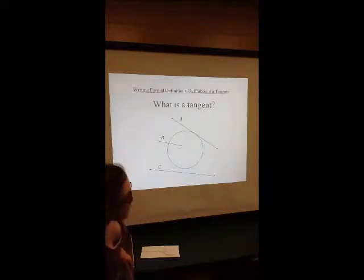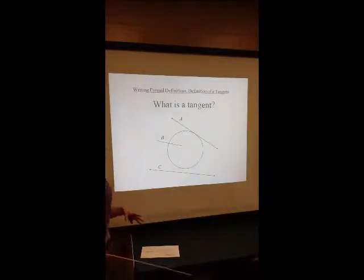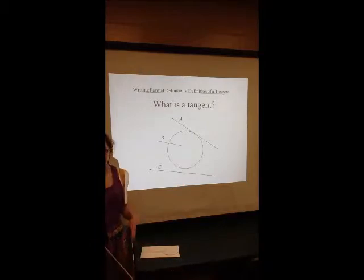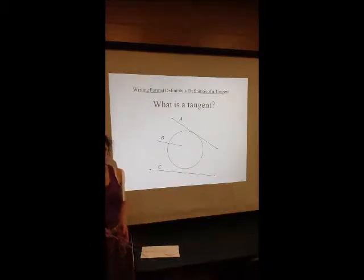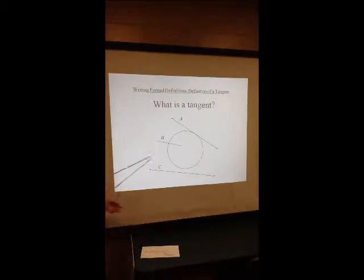For example, let's try to define a tangent. One might define a tangent as a line that hits a circle at one point. That sounds like a pretty good definition at first, so let's see if any of these examples are tangents.